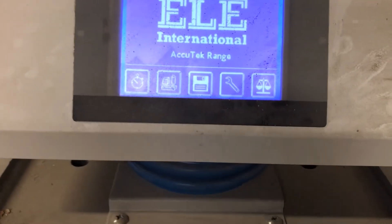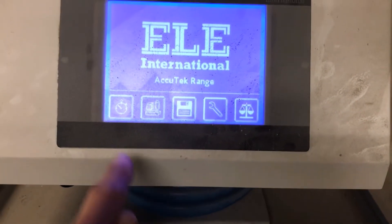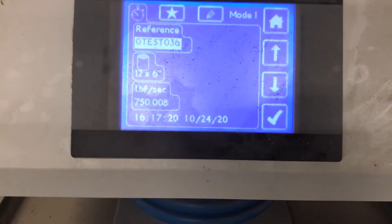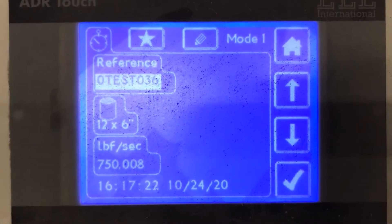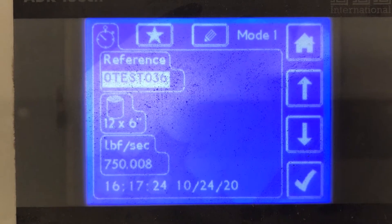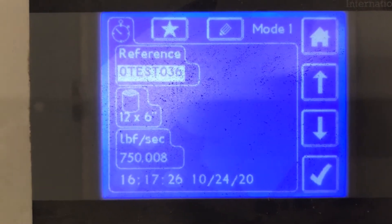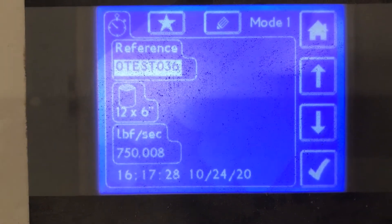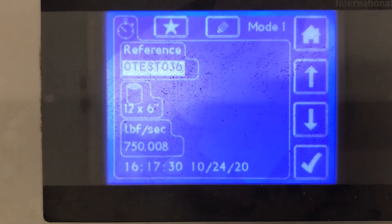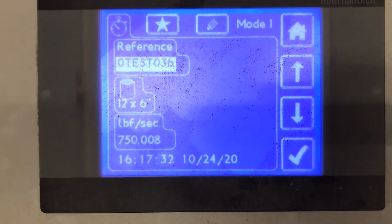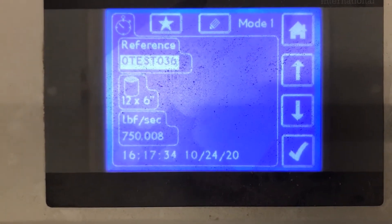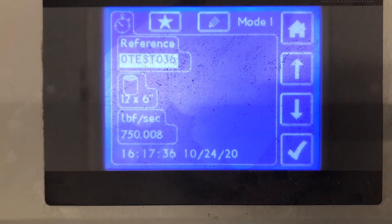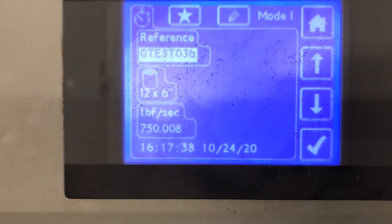Okay, so the home button. Okay, when I want to do a test, let's see what this button does. All right, so O test O 36. That will be my next test. 12 by 6 inches. That's the size of my specimen. This is October 24th, 2020. It's Saturday afternoon, October 24th, 2020. It is 417 in the afternoon, approximately.